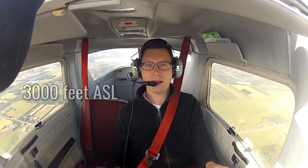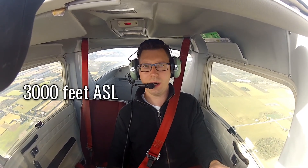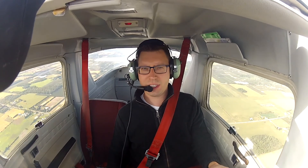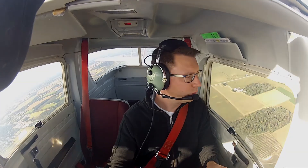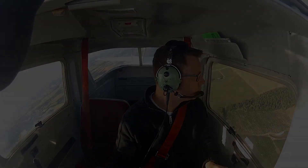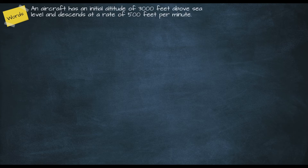I'm now cruising at an altitude of 3000 feet and it's time to get back down to the airport. Our rate of descent is 500 feet per minute. Let's quickly look at how our models change when we talk about descending instead of climbing. Our word description changes slightly: we now use an initial altitude of 3000 feet and a rate of descent of 500 feet per minute instead of a rate of climb.